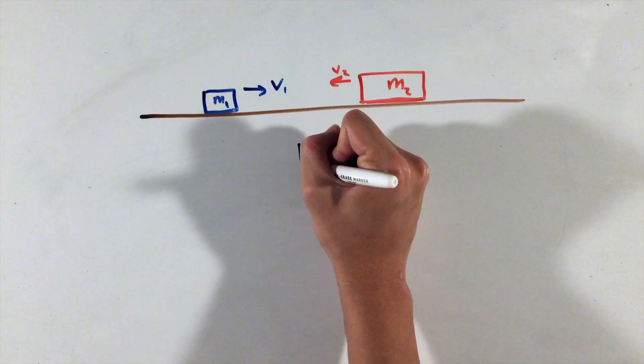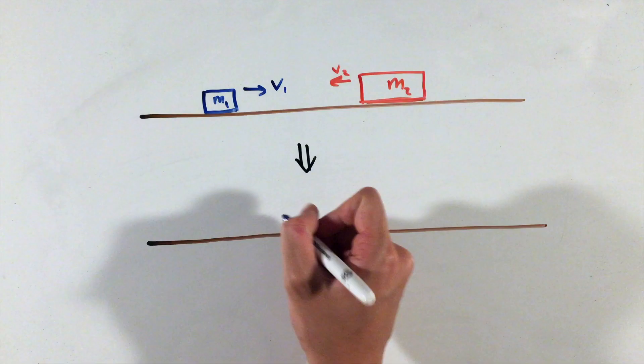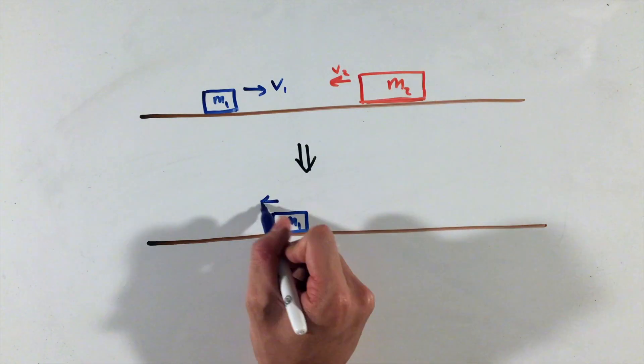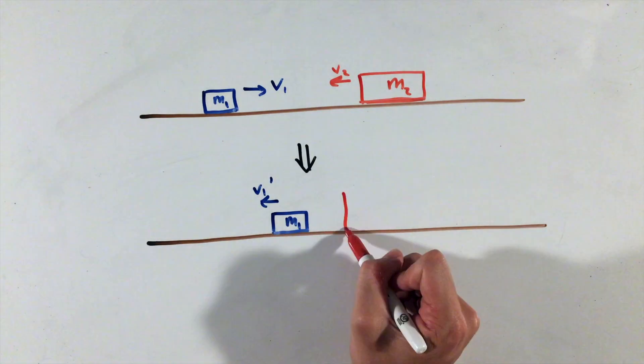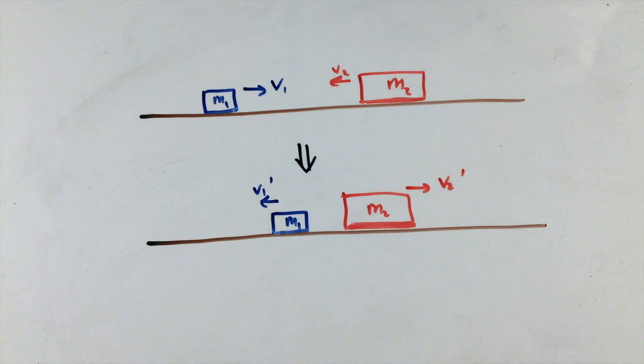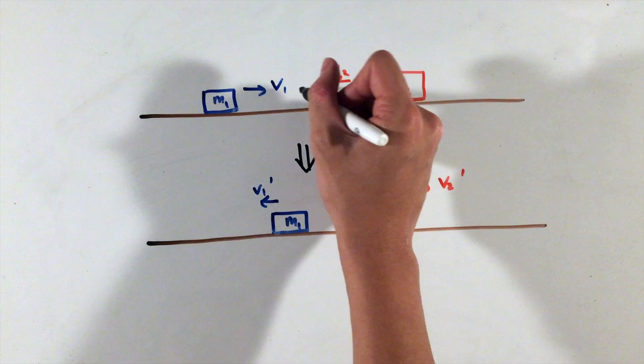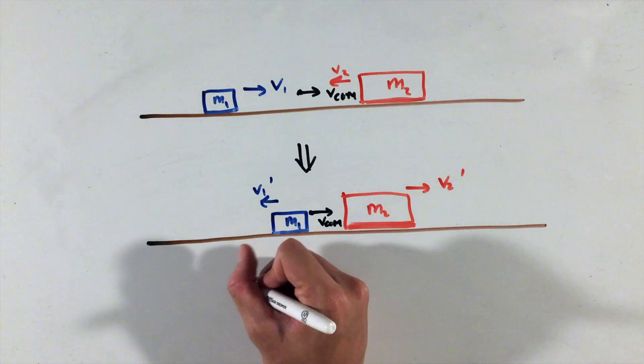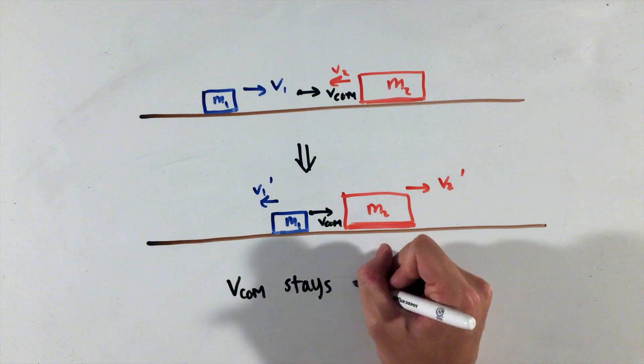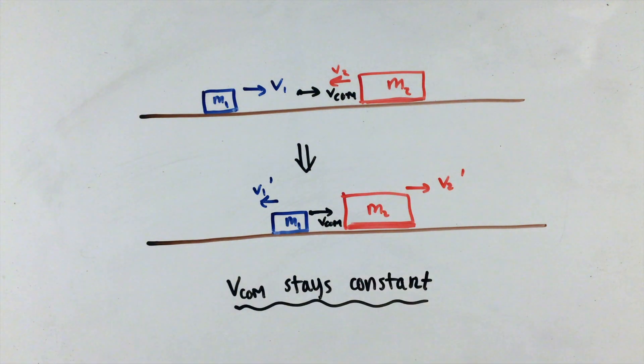One final trick using our new center of mass idea is that for both inelastic and elastic collisions, the center of mass's velocity actually does not change. While this produces the same equations as your momentum equations, it can offer a quick shortcut if both mass values and certain velocities are given, as you'll only need one equation ensuring the velocity of the center of mass before and after remains constant.